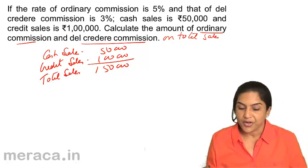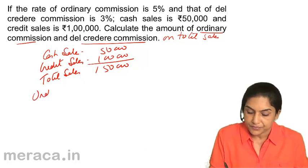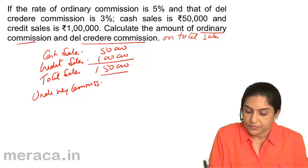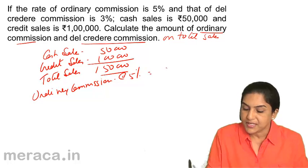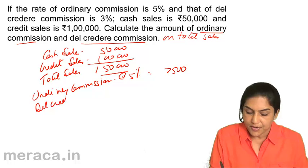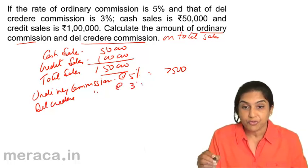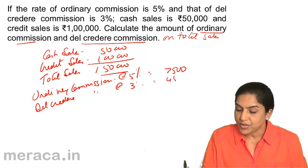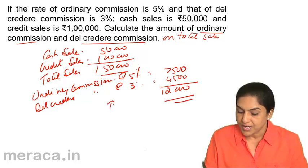So what is the ordinary commission? Ordinary commission is at the rate of 5%, giving us 7,500. Del Credere commission is at the rate of 3% of total sales, that's 4,500. Total of 12,000 is the total commission.